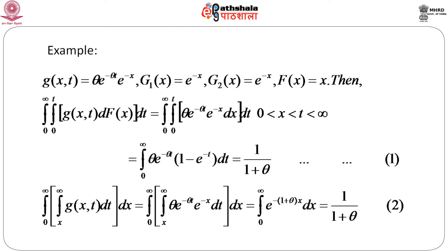Integrating first with respect to x from 0 to t: ∫₀ᵗ θ e^{-θt} e^{-x} dx = θ e^{-θt}(1 − e^{-t}). Integrating this over t from 0 to ∞ gives 1/(1+θ). For the reverse order — integrating first with respect to t from x to ∞ — the result simplifies to e^{-(1+θ)x}, and integrating from 0 to ∞ also gives 1/(1+θ). Both orders match, confirming that Fubini's Theorem applies since all conditions are satisfied.